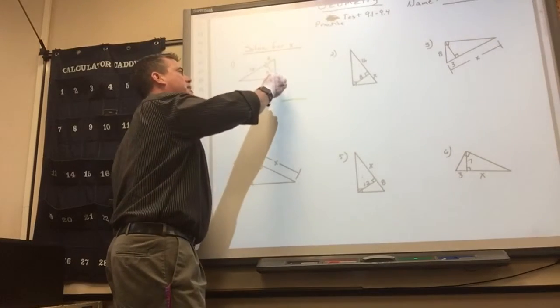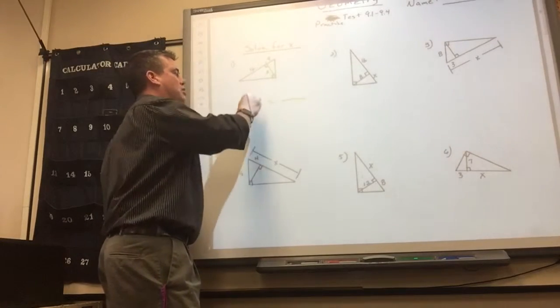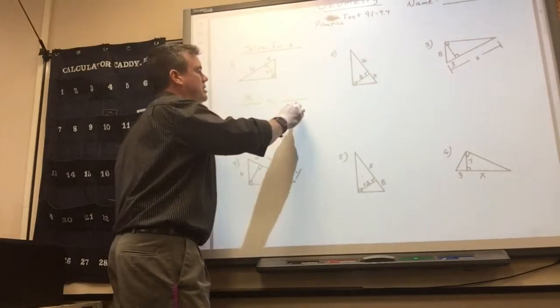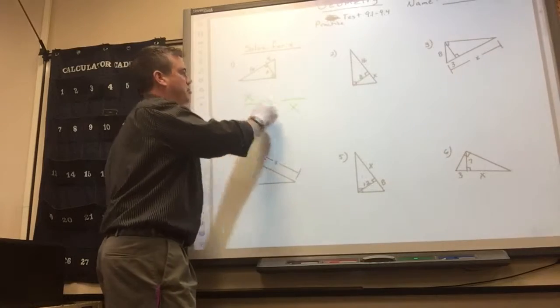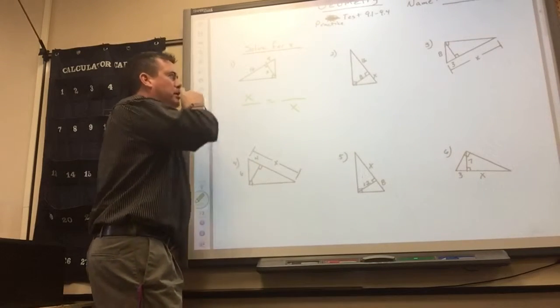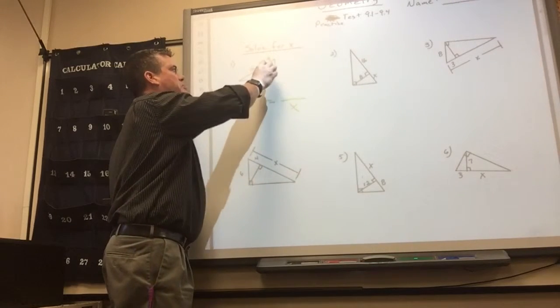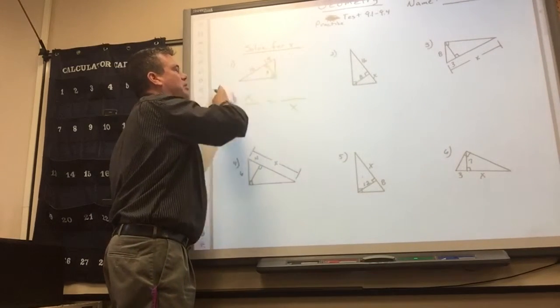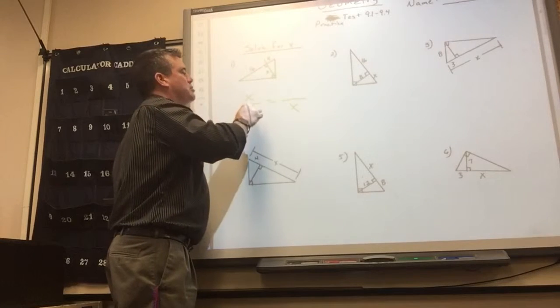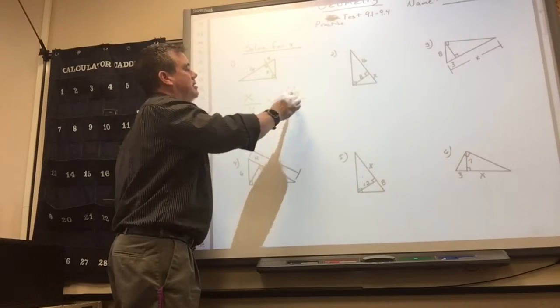Remember, this piece is a geometric mean, so it goes in there twice. It doesn't matter if you put them that way or that way. And when it's this piece, you put each part of the hypotenuse — 4 and 16.